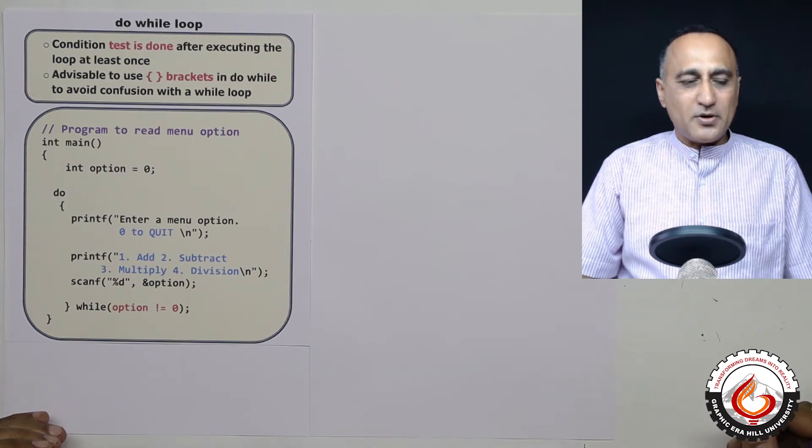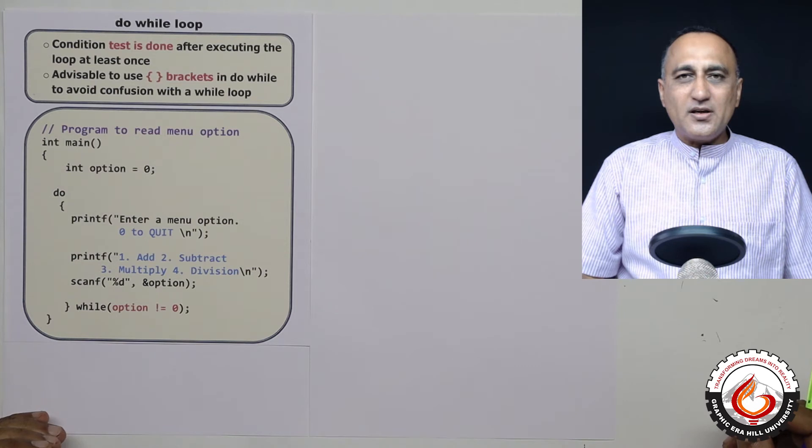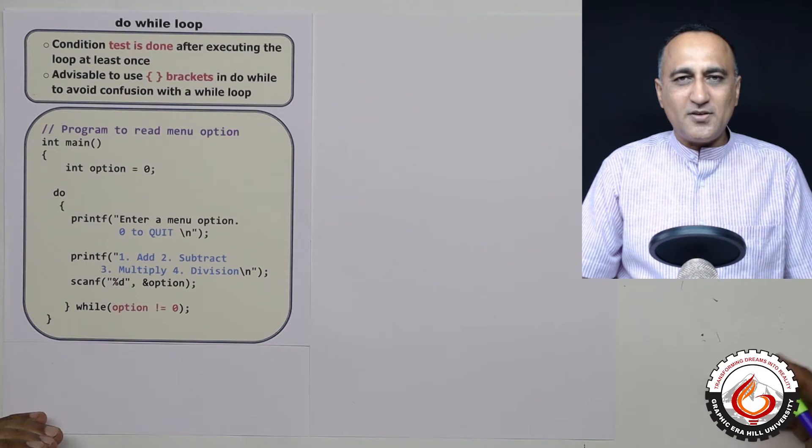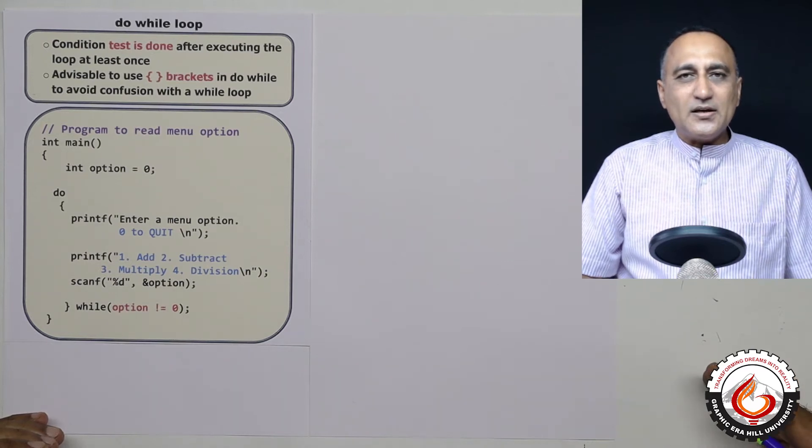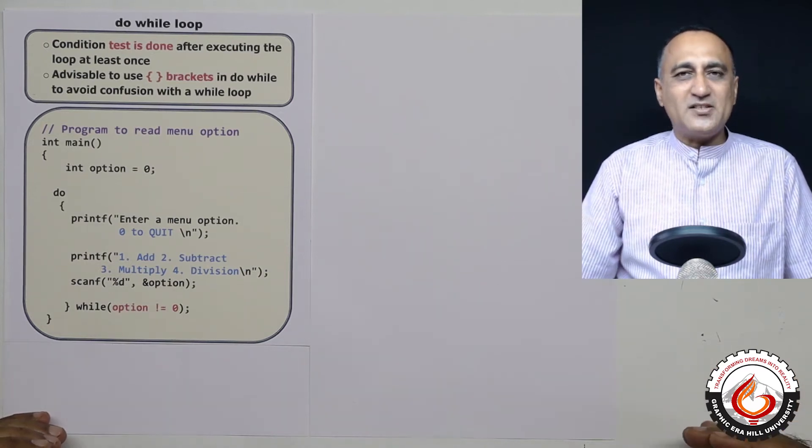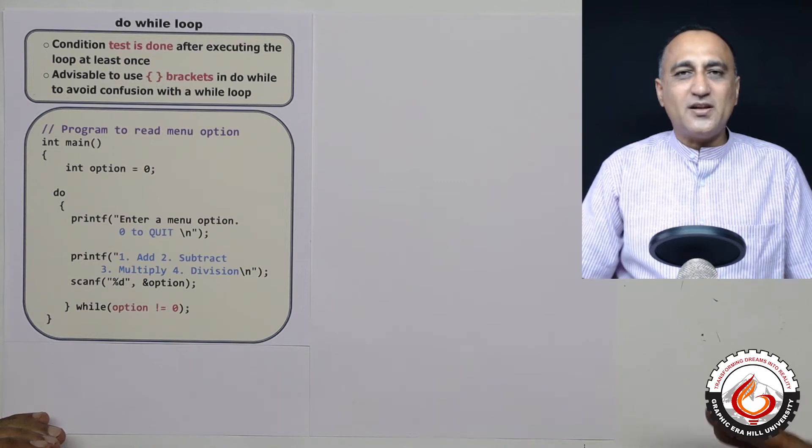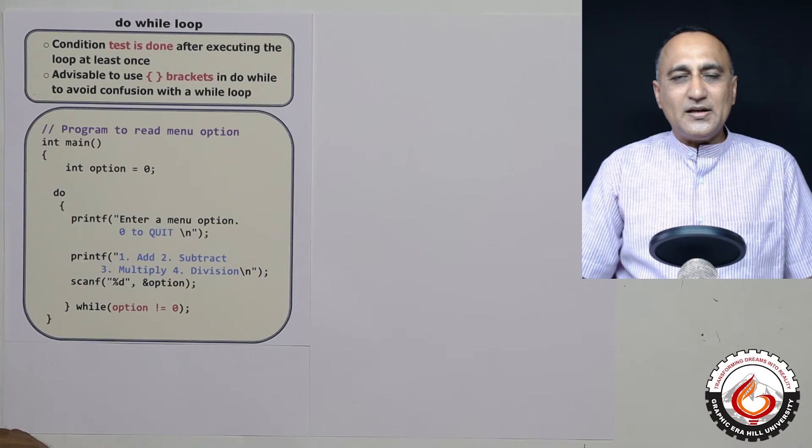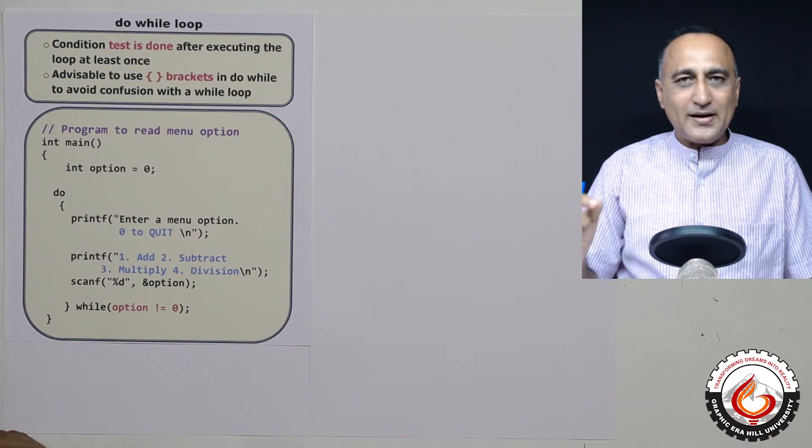This is very important because suppose you are giving the user certain options. Initially the user will have not entered any option. If you use a while loop, the body of the loop may never get executed because the initial value itself may be false. With the do while loop you ensure that the body of the loop is executed at least once.